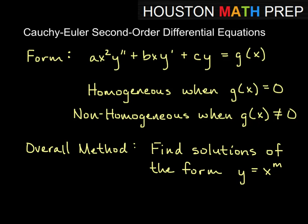So here looking at Cauchy-Euler second order differential equations, we have our form listed: ax squared y double prime plus bxy prime plus cy equals some function g of x.